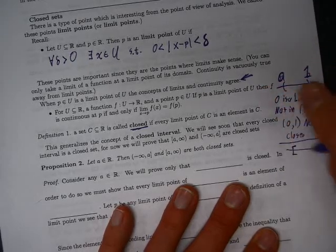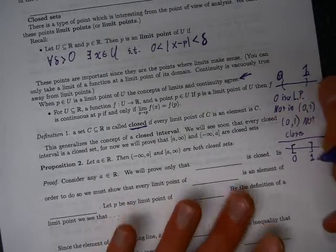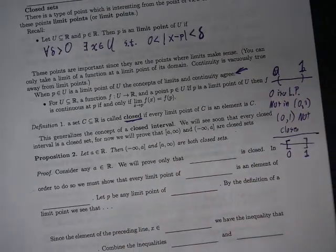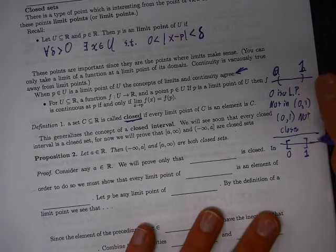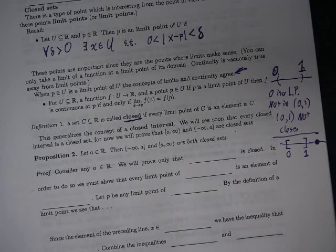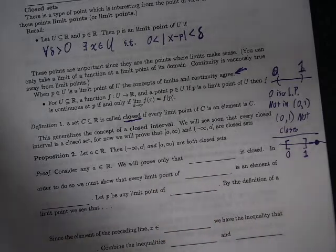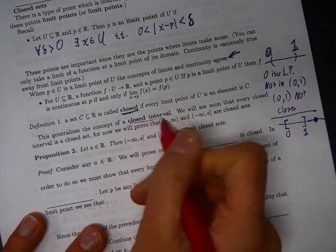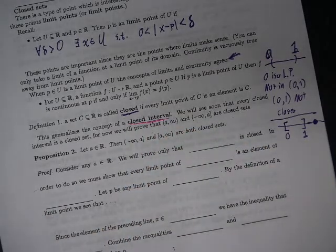What about the closed interval [0,1]? That should be closed. What if we take [0,1] and add a single isolated point? Is that still closed? Yes. Closedness doesn't require every point to be a limit point — isolated points are fine. The definition only requires that every limit point of the set is actually in the set.